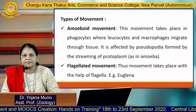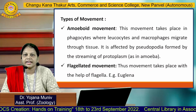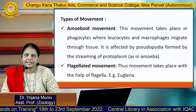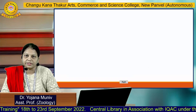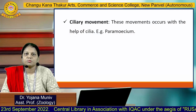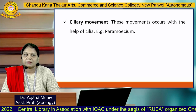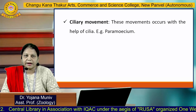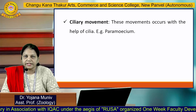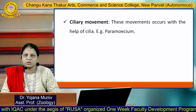The next type is flagellated movement, which takes place with the help of flagella. For example, in the case of Euglena, the flagellum is a tail-like structure that helps them move. The next one is ciliary movement, which occurs with the help of cilia. For example, Paramecium is covered with a lining having a number of cilia, and the beating of cilia helps it in locomotion.